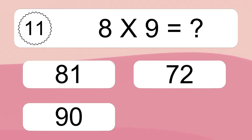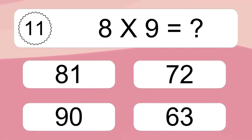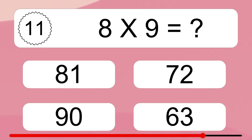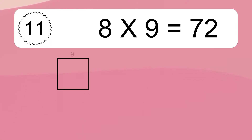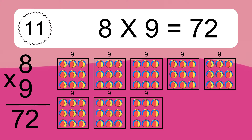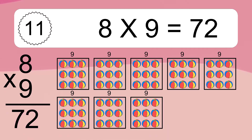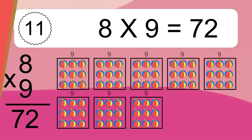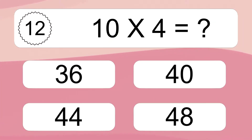8 times 9 equals what? 8 times 9 equals 72. We have 8 boxes and each box has 9 colorful balls inside. If you count all the balls in all the boxes together, you will have 8 times 9 balls. This equals 72 balls.